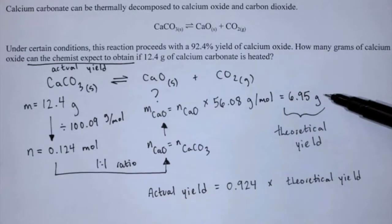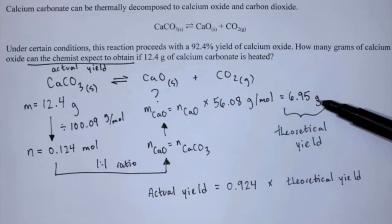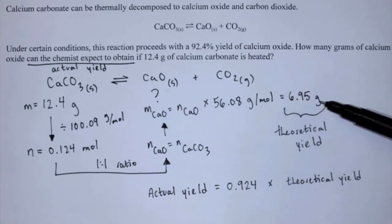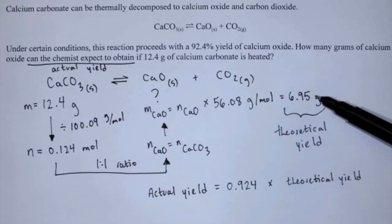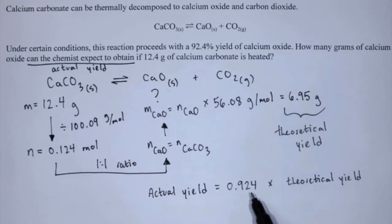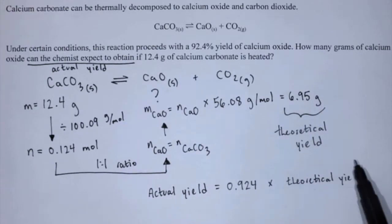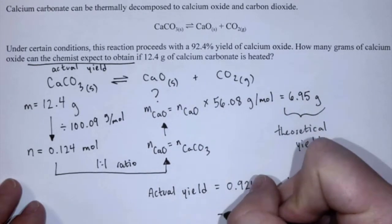It's similar math to a test analogy: if there are 20 questions and you got 92.4%, you multiply the percentage by the total to find how many you got right. Here, the 'questions' are grams measured on a balance — the theoretical yield. So we take our percent yield expressed as a decimal, multiply it by the theoretical yield, and this gives us the actual yield.